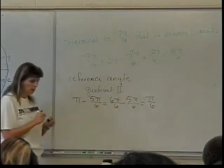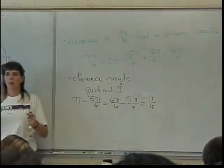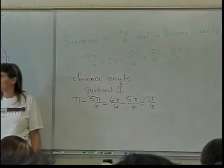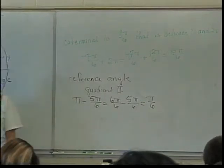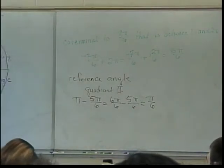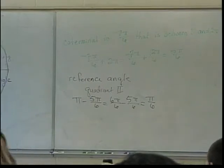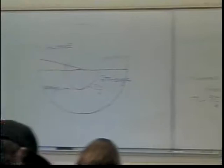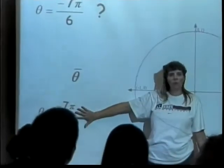5 over 6. Now, here's the big question. By the way, this symbol right here, with the theta with the line over it, that says that's the reference angle symbol. This is the reference angle for that angle.